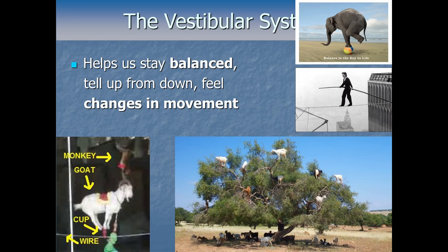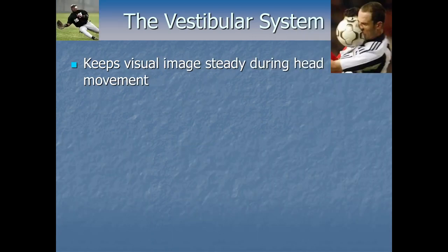Functionally, the biggest role of the vestibular system is to help us stay balanced as we stand, walk, and run. It also helps us tell up from down and helps us feel changes in movement — like if someone pushes you off balance, if a car suddenly speeds up, or if a plane drops 300 feet in bad turbulence. We perceive that thanks to the neurons in the vestibular system detecting those movement changes and firing a signal to the brain.